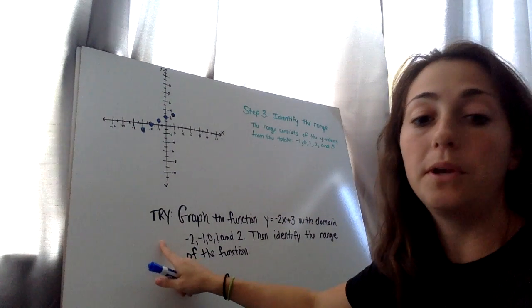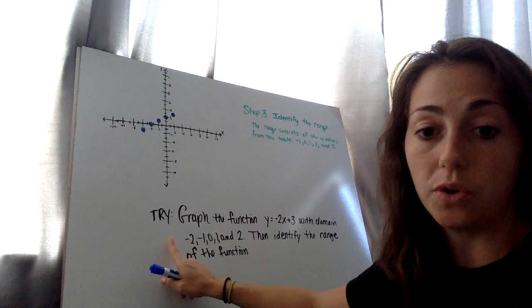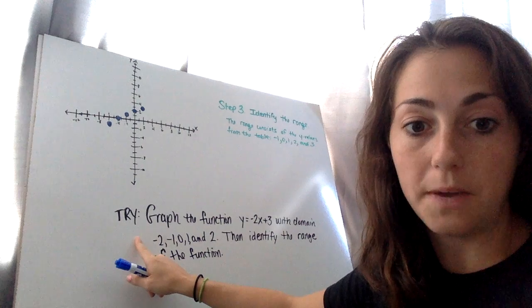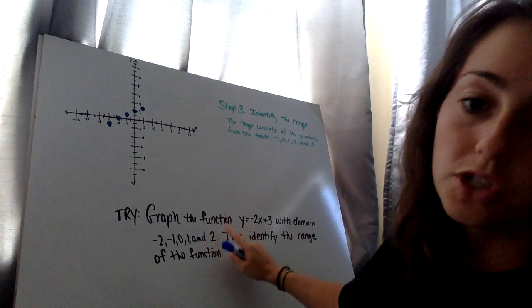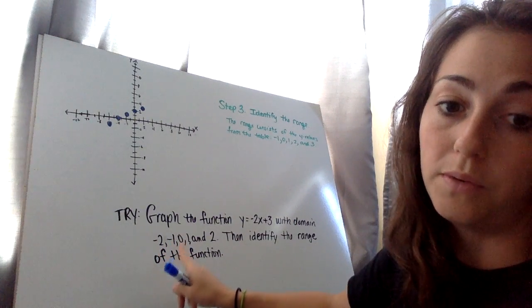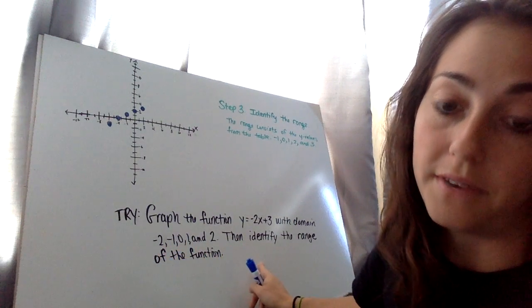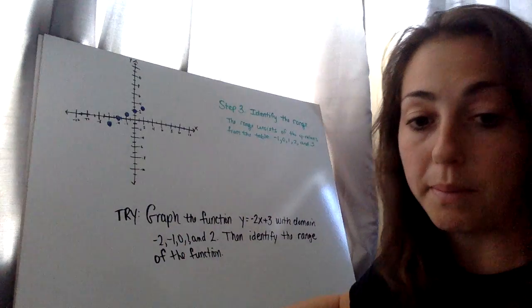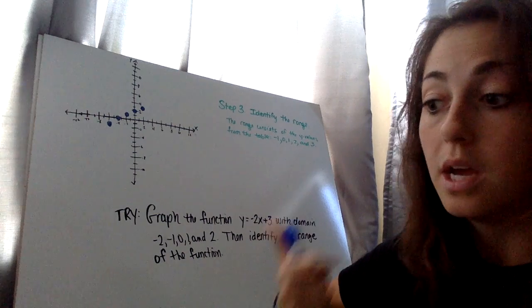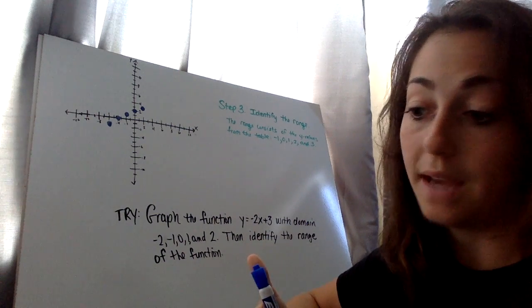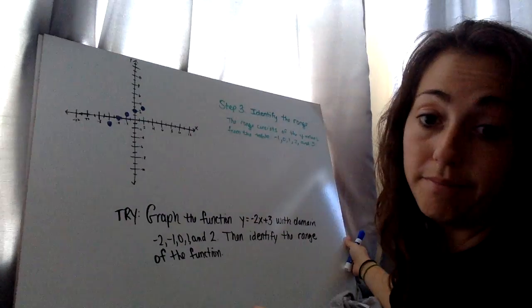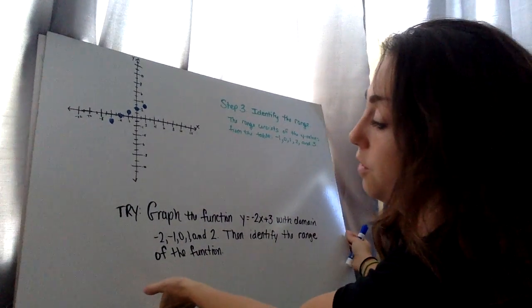I want you to try this problem on your own. I have the answer already done, so I'm just going to show you it. Pause the video after you finish getting everything done. Try graph the function y equals negative 2x plus 3 with the domain, negative 2, negative 1, 0, 1, and 2, and then identify the range of the function. So it's a different domain that we picked for this one, but it's the same steps. Step 1, make the table. Step 2, list the other pairs and graph. Step 3, identify the range. So once you're done, unpause the video and check out your answer and see if you're right.